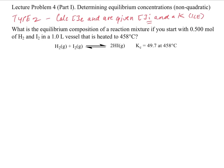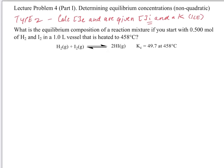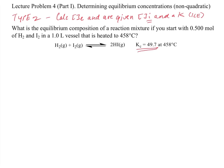The question asks: what is the equilibrium composition of a reaction mixture if you start with 0.5 moles of H2 and I2 in a 1-liter vessel heated to 458 degrees Celsius? We get a Kc value — that's one thing we need. And we're starting with 0.5 moles of H2 and I2, so their initial concentrations are equivalent to each other. That's actually a hint.